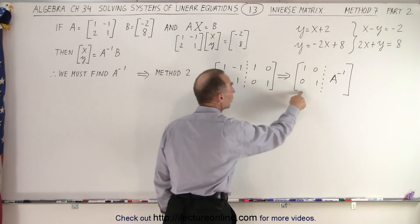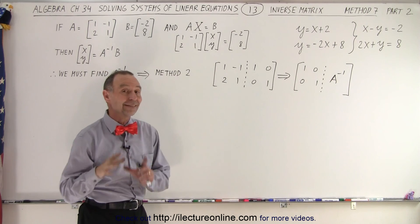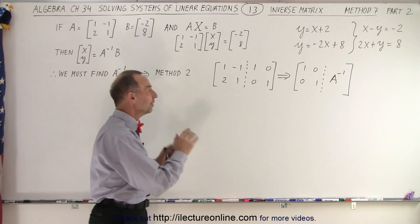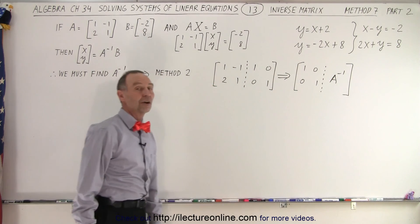And notice, to go from here to here, we use what we call the reduced row echelon form, exactly the same as what we used before. But now we have something different on the right side where this will become the inverse matrix of A.